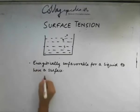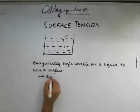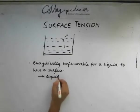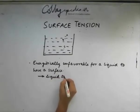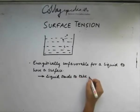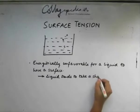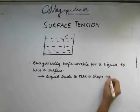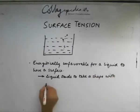So what it does, the liquid tends to reduce its surface. The liquid tends to take a shape with minimum surface area.